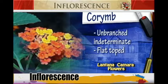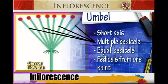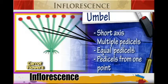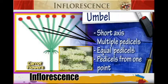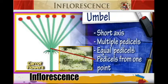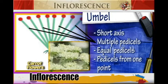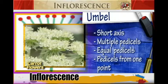Another inflorescence is the Umbel. It has a short axis with multiple pedicellates of equal length forming from one point. So all the pedicellates grow from one point, and they are very short. This is the Umbel type of inflorescence.